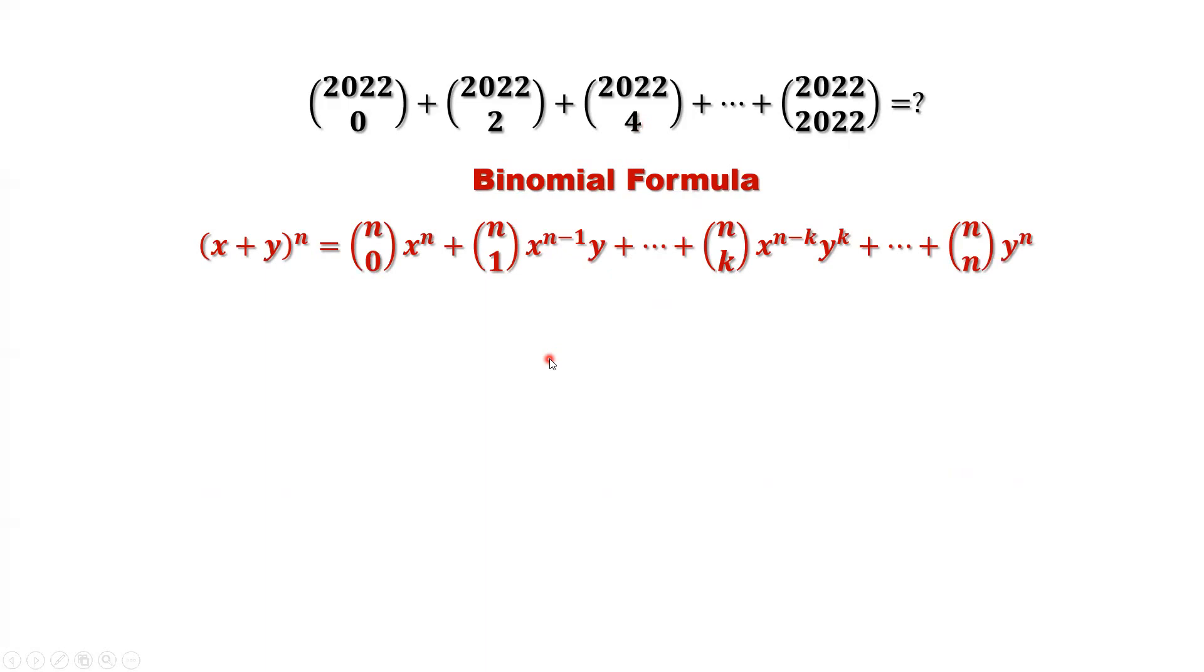First result: if we pick special values for x and y, we will have a simple result. Replace x by 1, y also by 1. We have 1 plus 1 is 2.